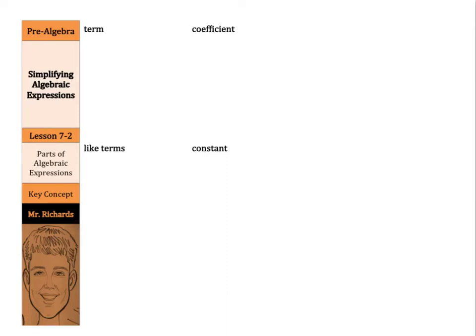Hi, Mr. Richards here, and today's lesson is on simplifying algebraic expressions. Our objective is two-part. First, to identify parts of an algebraic expression, and secondly, to use the distributive property that we learned in Lesson 7-1 to simplify algebraic expressions.